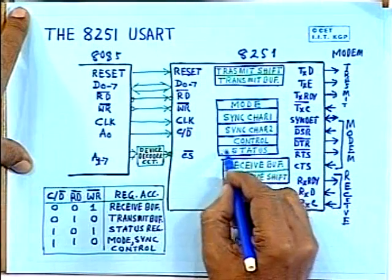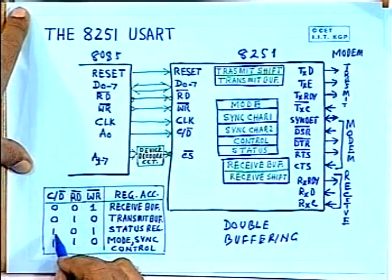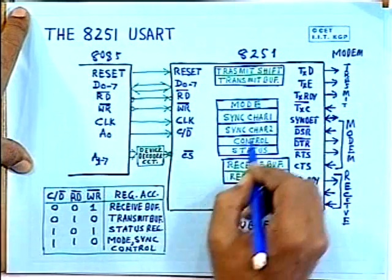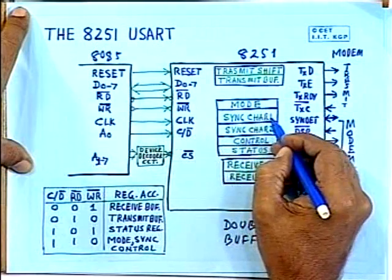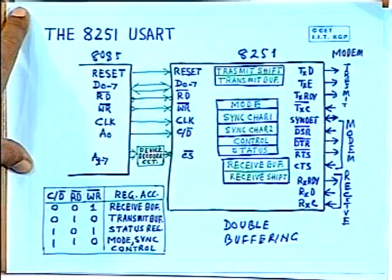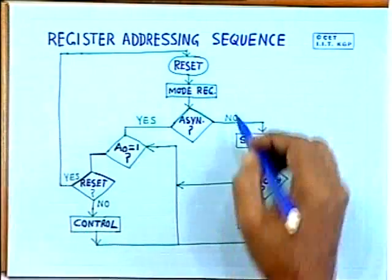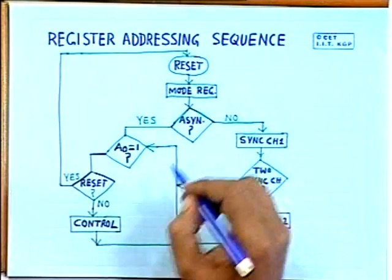There is a status register accessible by using C/D = 1. The mode register, synchronization character 1, synchronization character 2, and control register are all provided with a single address. These four registers can be accessed one after the other in a sequence explained by a flowchart — accessed sequentially using the same single address.